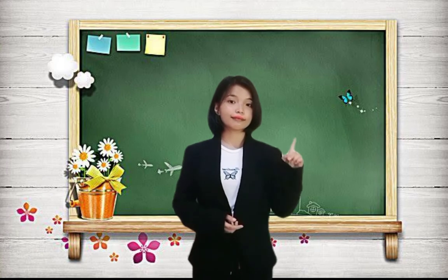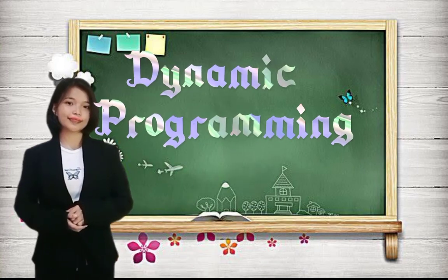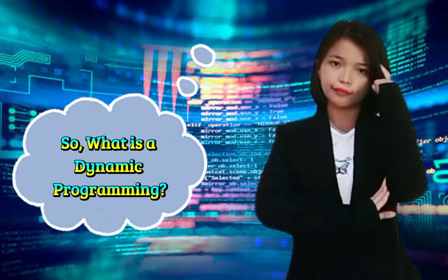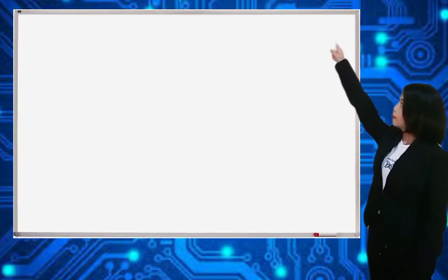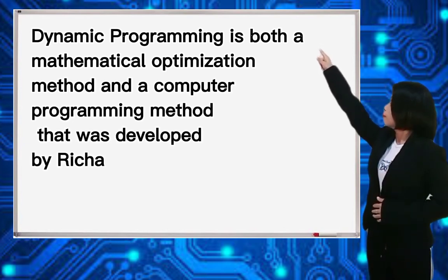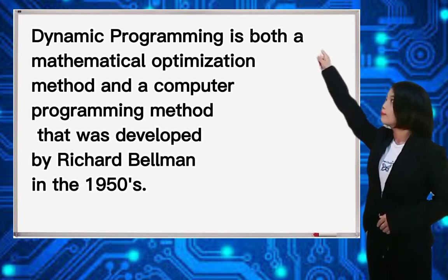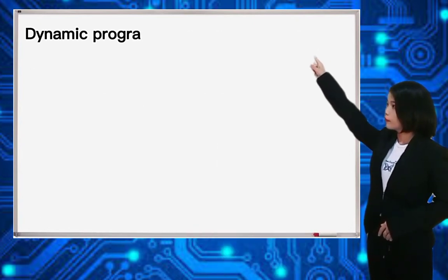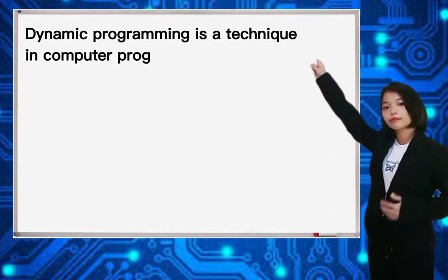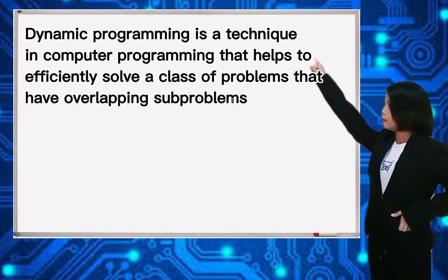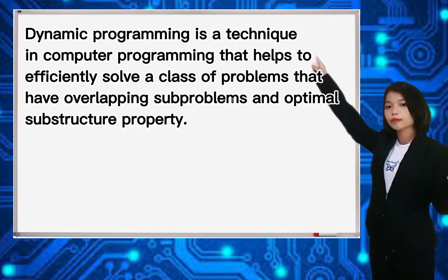We are now going to learn a type of algorithm, which is dynamic programming. So, what is dynamic programming? Dynamic programming is both a mathematical optimization method and a computer programming method that was developed by Richard Bellman in the 1950s. Dynamic programming is a technique in computer programming that helps to efficiently solve a class of problems that have overlapping subproblems and optimal substructure property.